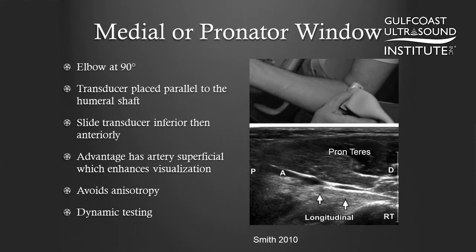The distal biceps tendon is a structure that's clinically relevant, and because of its obliquity, it's somewhat difficult to view anteriorly. Because of that, several different methods have been used to describe the distal biceps tendon. One of those is the pronator window, so I would like to demonstrate that for you today.